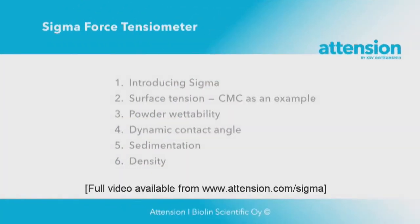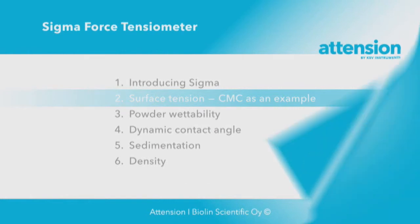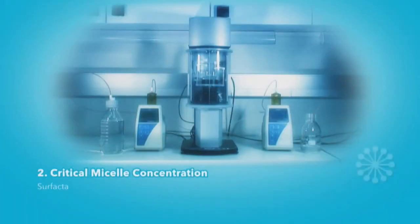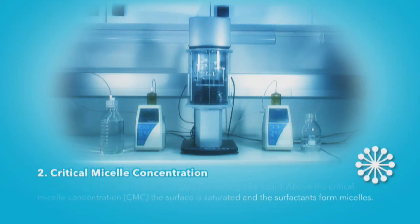Next, surface tension is measured to determine critical micelle concentration. Surfactants in low concentrations occupy the surface of a liquid. Above the critical micelle concentration, the surface is saturated and the surfactants form micelles.